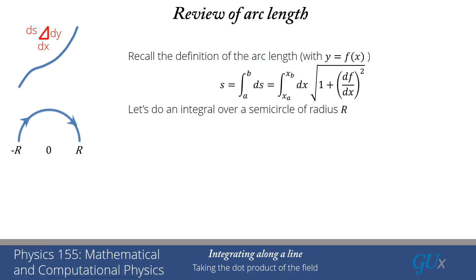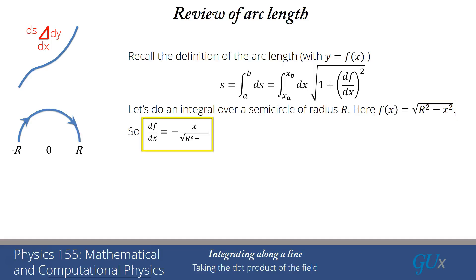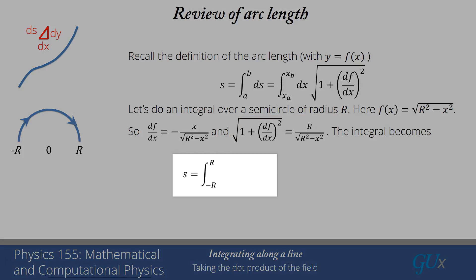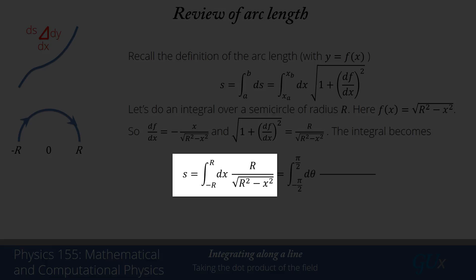Let's do an integral over a semicircle of radius r. The function f of x equals the square root of r² minus x². Then df/dx equals minus x over the square root of r² minus x². When I square that and add 1, I get 1 plus x² divided by r² minus x², and putting everything over the same denominator, I get r² in the numerator and r² minus x² in the denominator. Taking the square root gives r divided by the square root of r² minus x². Plugging into the integral gives an integral from minus r to r of r over the square root of r² minus x², dx.